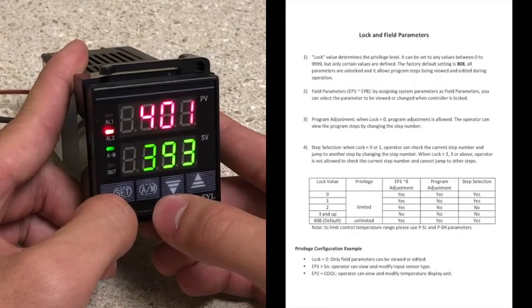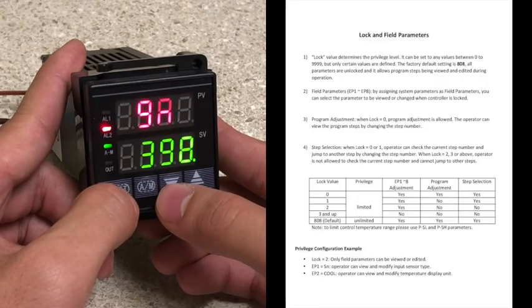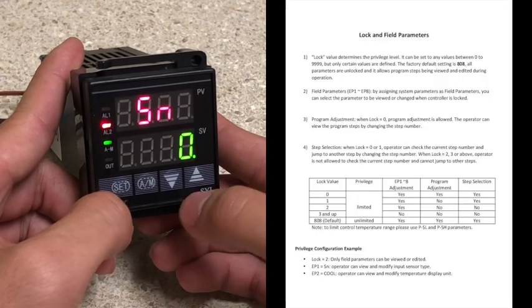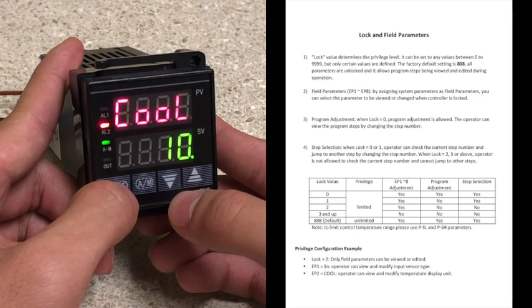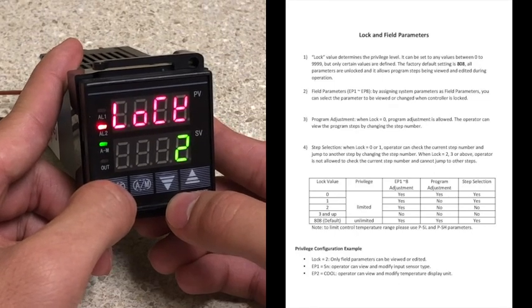Now I'm going to go into my parameter editing profile again, and you can see there's only three parameters: the SN parameter, the COOL parameter, and the LOCK parameter.